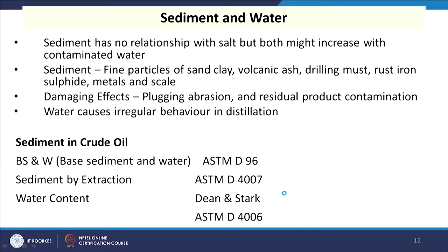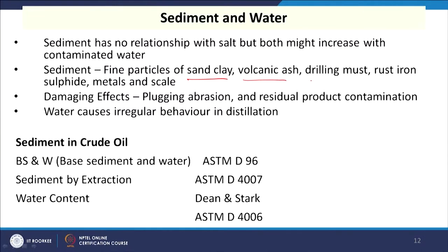Metals can be measured by atomic absorption spectroscopy. Another property is sediment and water. When crude oil is taken out, it contains different types of sediments — basically sand, clay, volcanic ash, drilling mud, rust, iron sulphide, and different types of scales. These contribute the sediment, and water is also present in crude oil. The presence of these affects the refining process — causing plugging, abrasion, and residual product contamination. Water causes irregular behavior in distillation.